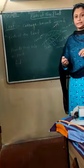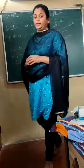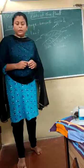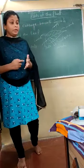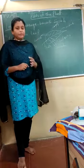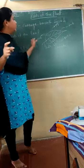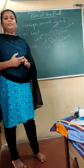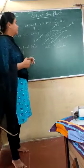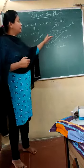We know that the leaf is the most important part of the plant. Without a leaf, the plant is not going to live at all. There must be a leaf for a plant to be alive, because leaves are going to help the plant in the preparation of food. We will discuss this more shortly.